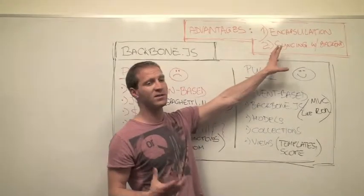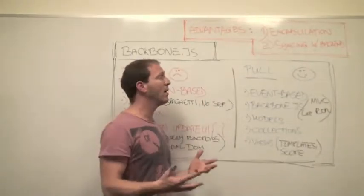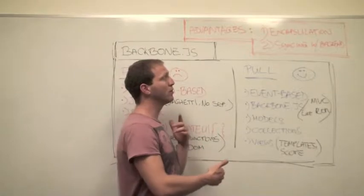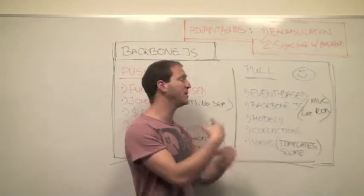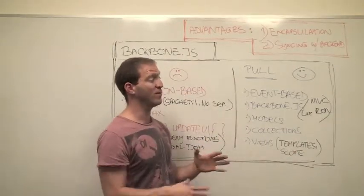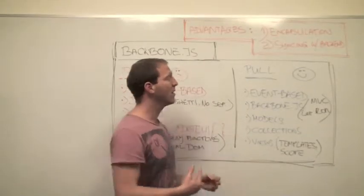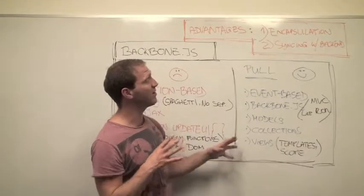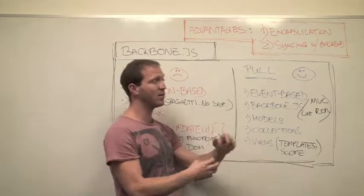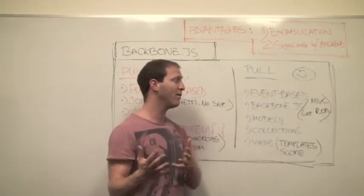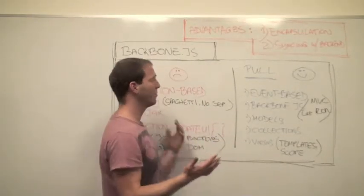But Backbone goes even further by giving you a very simple and clear API to get data from the server and update the model with single functions like fetch, which just makes managing the front end and keeping it in sync with the data on the back end far more simpler than doing it on your own.